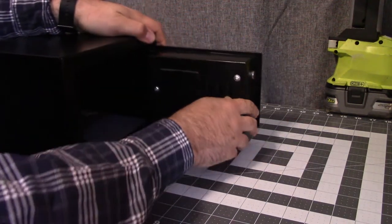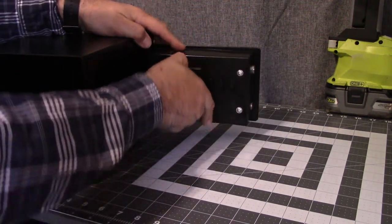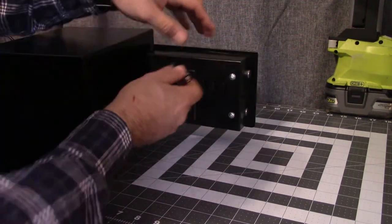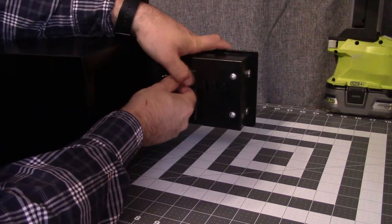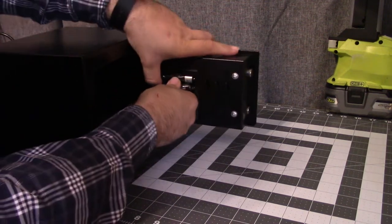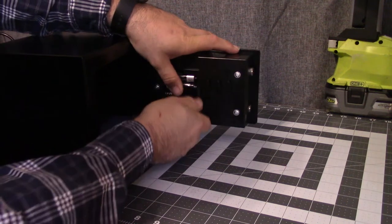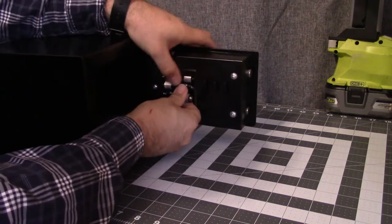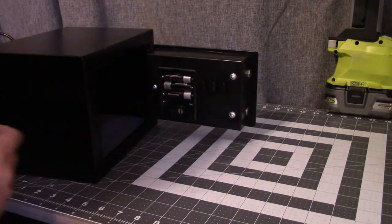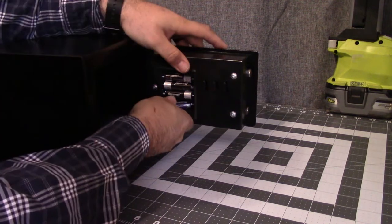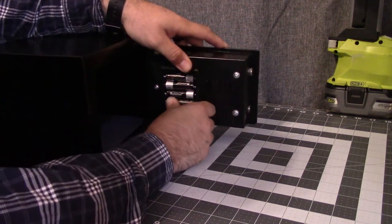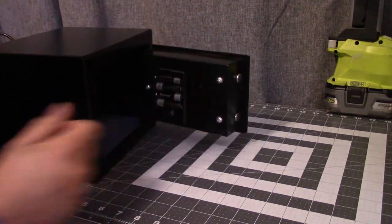First what we want to do is go ahead and insert the battery. So we will take this off. Make sure you insert in the right direction. Okay, so it just came on. We will put the cover back.